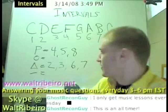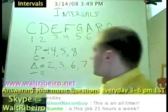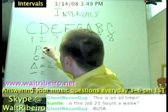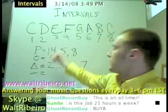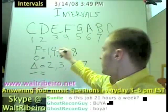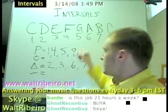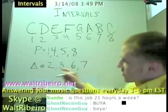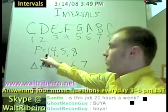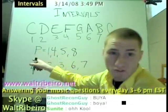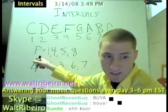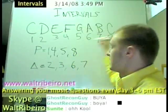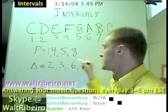So here's what you have. Your perfect intervals are 1, 4, 5, and 8. And let's not worry about diminished or minor for now. Your major intervals are 2, 3, 6, and 8.